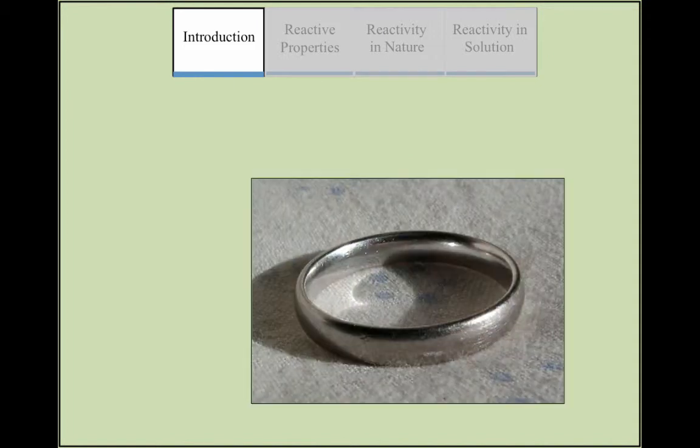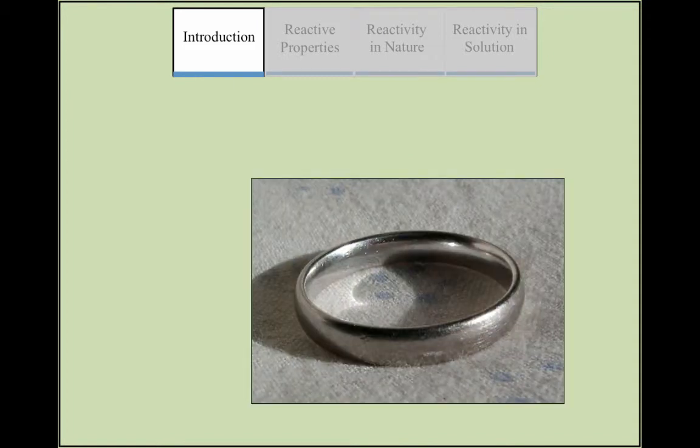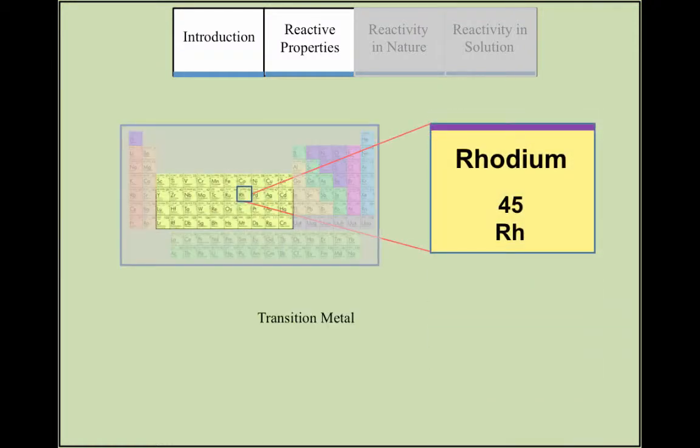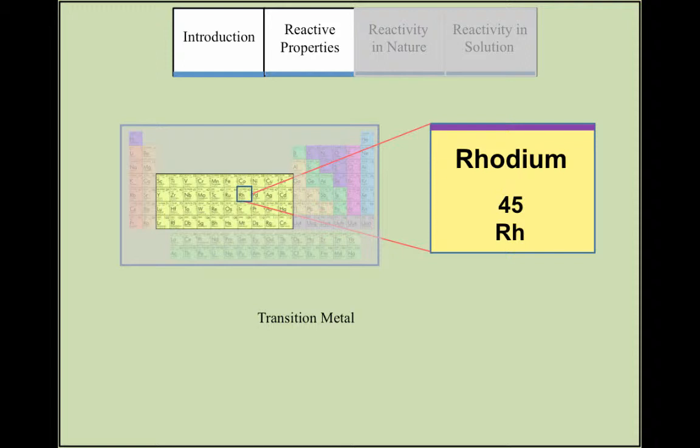Rhodium's high resistance to tarnishing and reflective properties also make it very useful in plating jewelry. Rhodium is a transition metal situated in the middle of the periodic table. It has an electronegativity of 2.28 on the Linus Pauling scale, giving it neither a high nor low electronegativity. Rhodium in its pure form is inert.